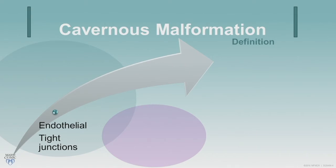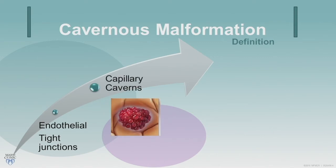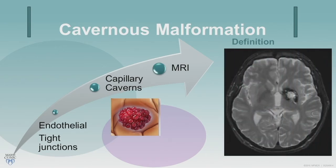Those capillary endothelial cells at the macroscopic level proliferate and form this berry-like structure that you would see on histology, and that translates to what we see on MRI. These endothelial-lined caverns can have thrombosis and blood within them as well as calcium, which translates to what we see on a T2 MRI — a reticulated T2 center and a surrounding hemosiderin dark spot, giving that typical popcorn or raspberry type lesion.